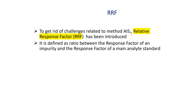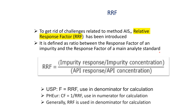To get rid of the challenges related to the AIS method, the Relative Response Factor (RRF) has been introduced. It is defined as the ratio between the response factor of an impurity and the response factor of the main analyte. Response factor is the area response divided by concentration. RRF equals the response factor of the impurity divided by the response factor of the API. USP uses factor F, where F equals RRF, and it is used in the denominator for calculation. Pharma Europa uses a correction factor equal to 1 divided by RRF, used in the numerator. Generally, in in-house methods, RRF is used in the denominator for calculation.